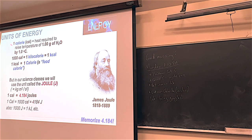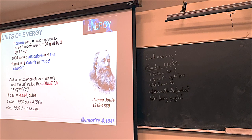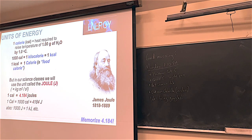So: science calorie uses small c, food calorie uses big C, but we're going to use the Joule, which gets a capital J. You can have a kilojoule, which is a thousand joules. All of these are totally possible.